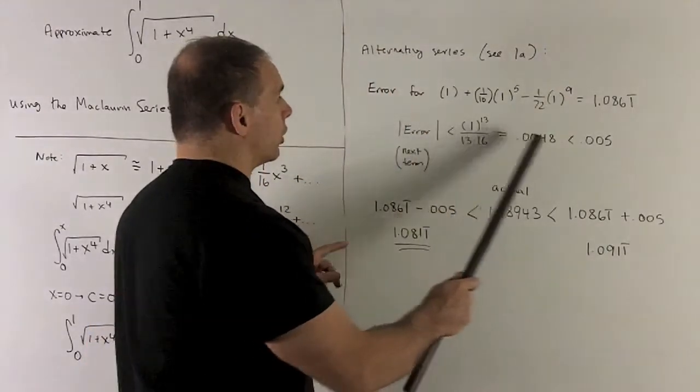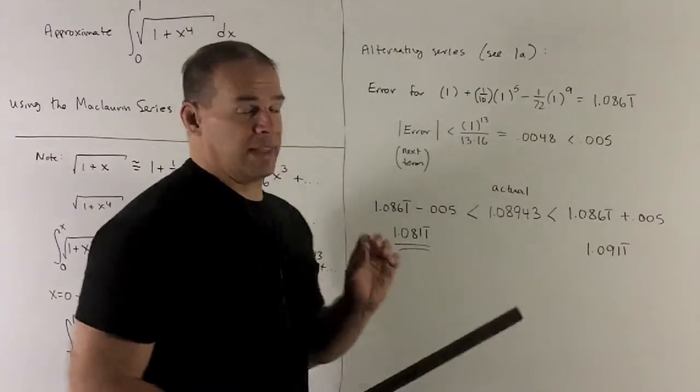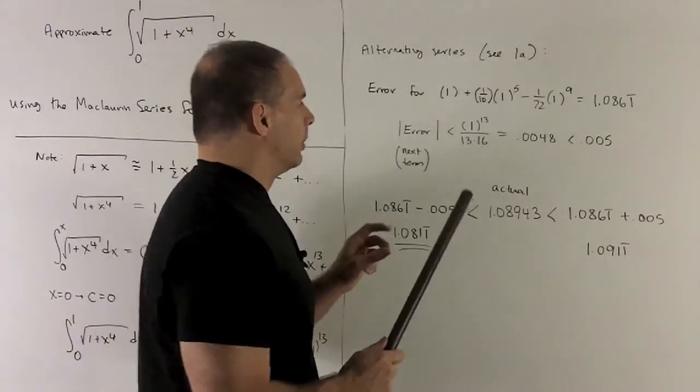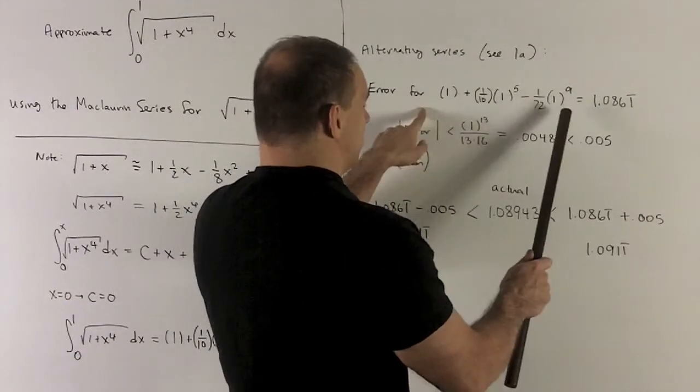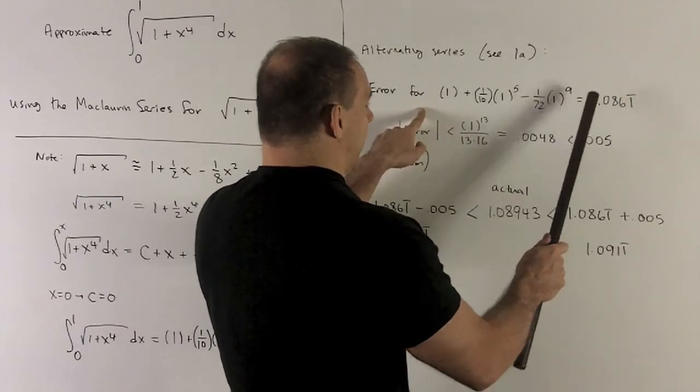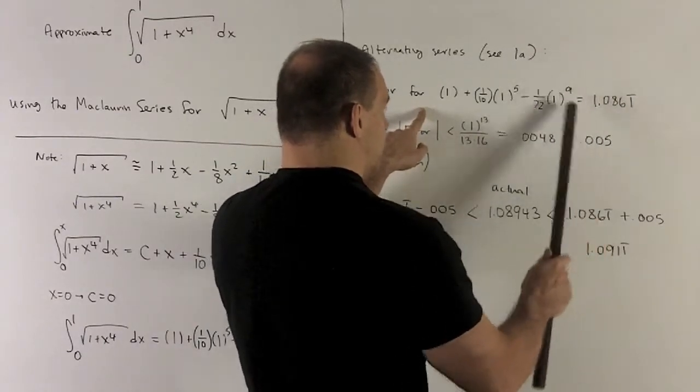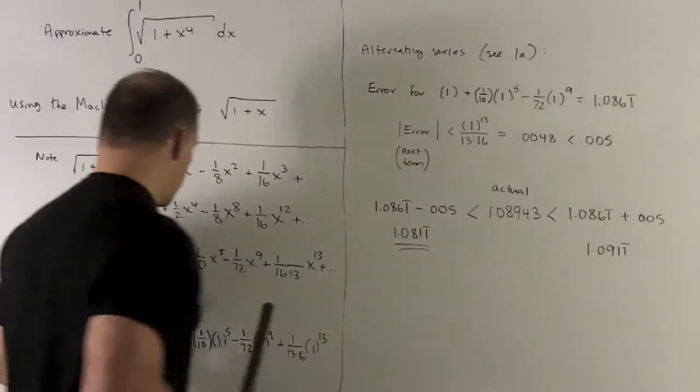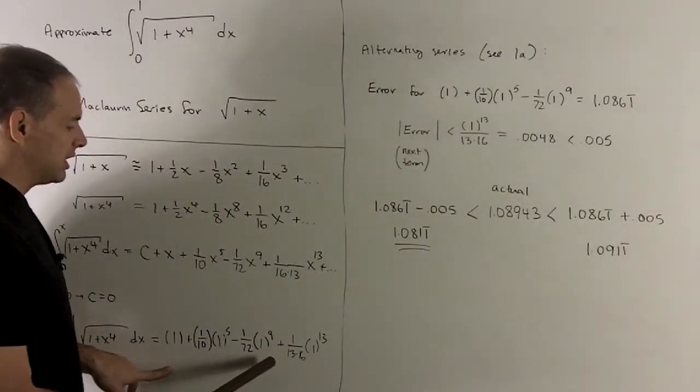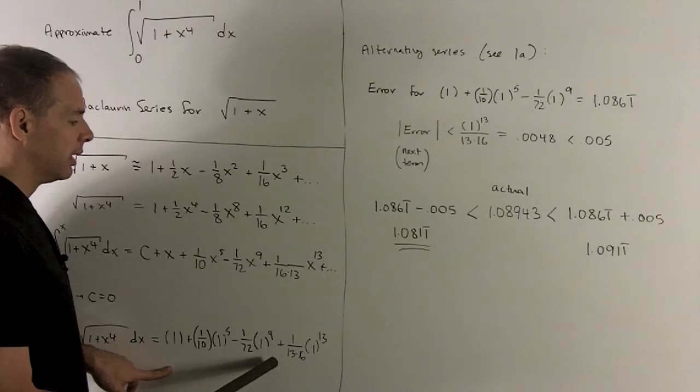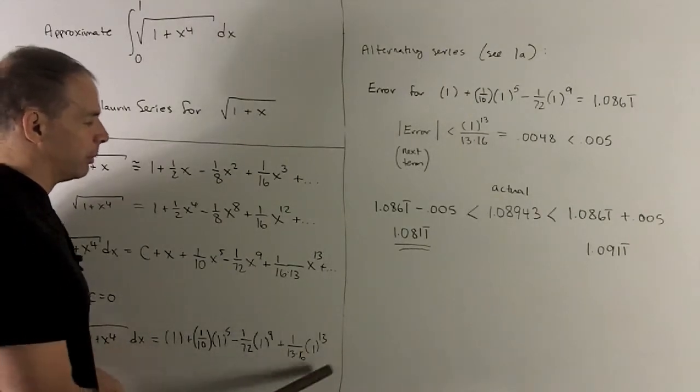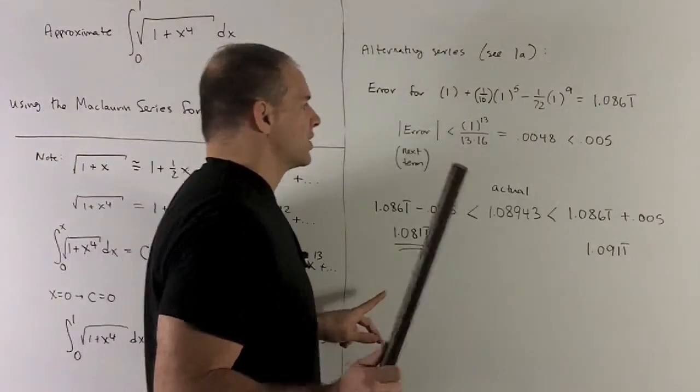So, since I have an alternating series, we can estimate the error. We know that the error is going to be, if you take out so many terms of your alternating series, the error is going to be bounded by the next term that shows up. So, if I use the first three terms here for my approximation, the error is going to be bounded by this term here.